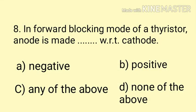Question number eight: In forward blocking mode of a thyristor, anode is made __ with respect to cathode. The anode is made positive with respect to cathode. Here the correct answer is option B.